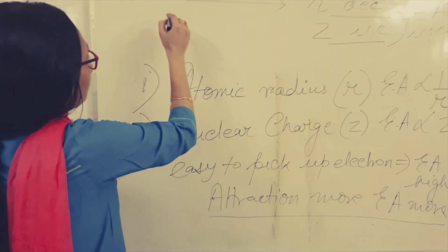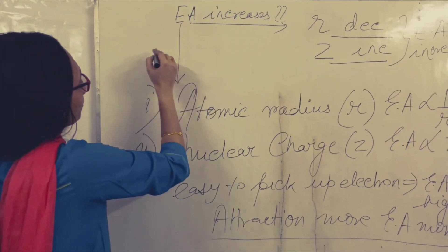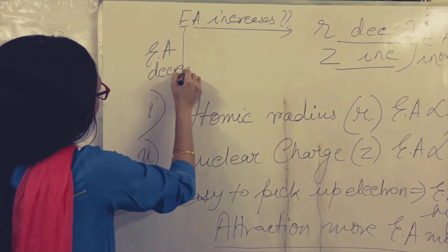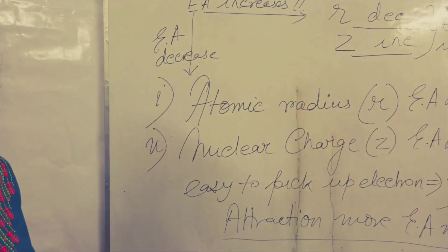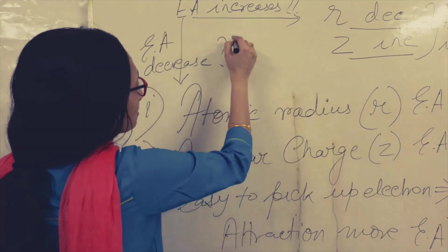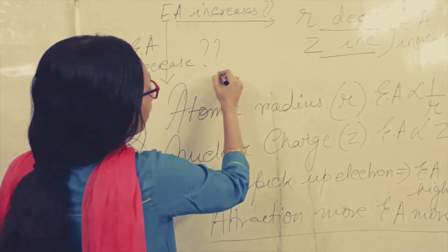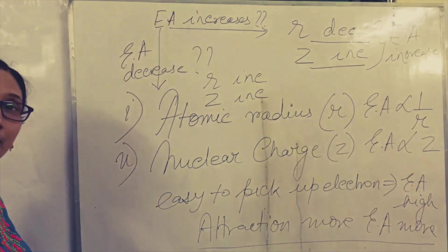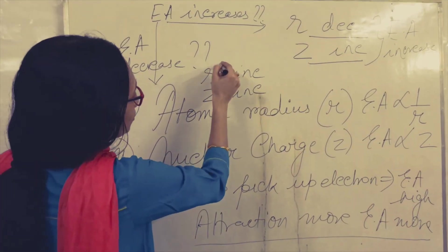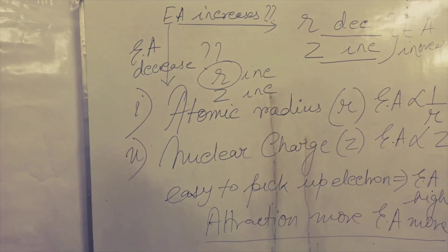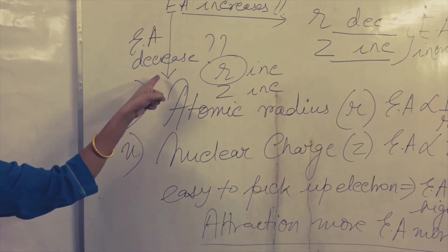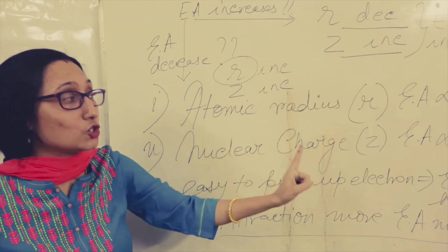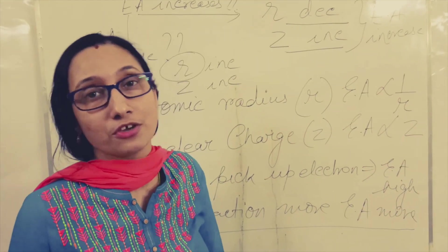Down the group, electron affinity will decrease from top to bottom. Down the group, R will increase and Z will also increase. Again, the predominating factor will be R. So when we are moving from top to bottom down the group, since R increases, electron affinity will decrease.